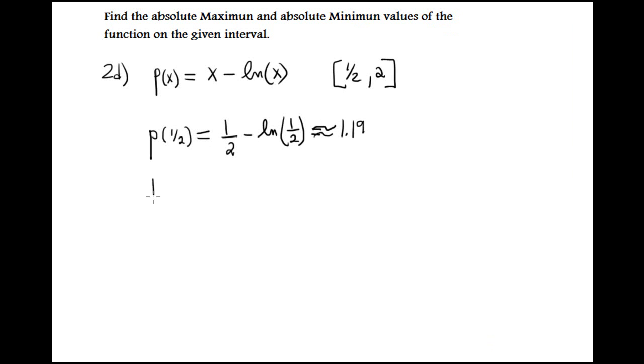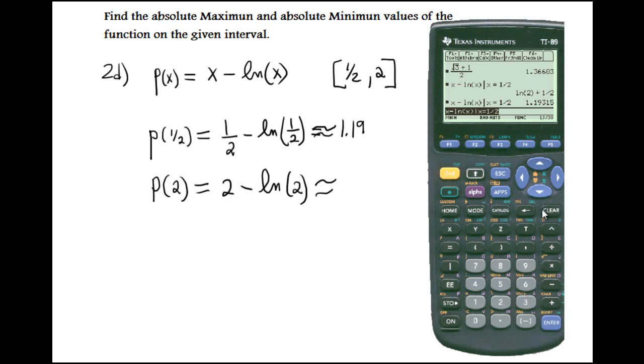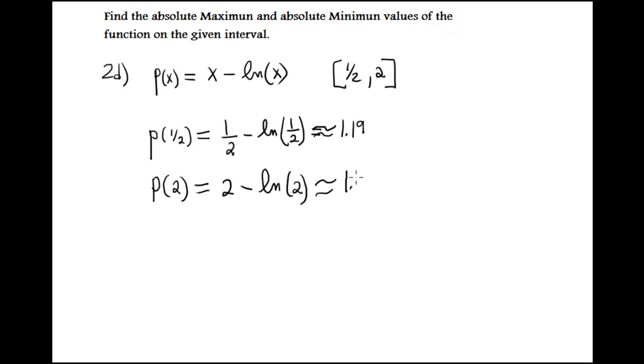And f, evaluate at two. Two is two minus natural logarithm of two. Again, calculate. Evaluate at two now. One point three. One point thirty one. One point three one.